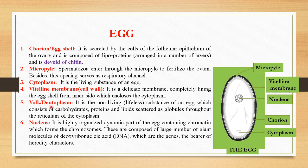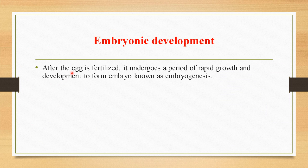Yolk or deutoplasm is the non-living or lifeless substance of an egg which consists of carbohydrates, proteins, and lipids scattered as globules throughout the reticulum of the cytoplasm. The nucleus is a highly organized dynamic part of the egg containing chromatin which forms the chromosomes. These are composed of a large number of giant molecules of deoxyribonucleic acid which are the genes — the bearers of hereditary characters. After the egg is fertilized, it undergoes a period of rapid growth and development to form an embryo, known as embryogenesis.